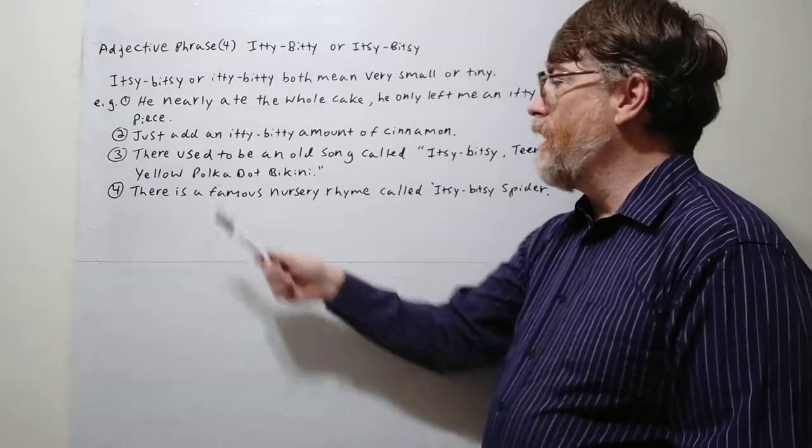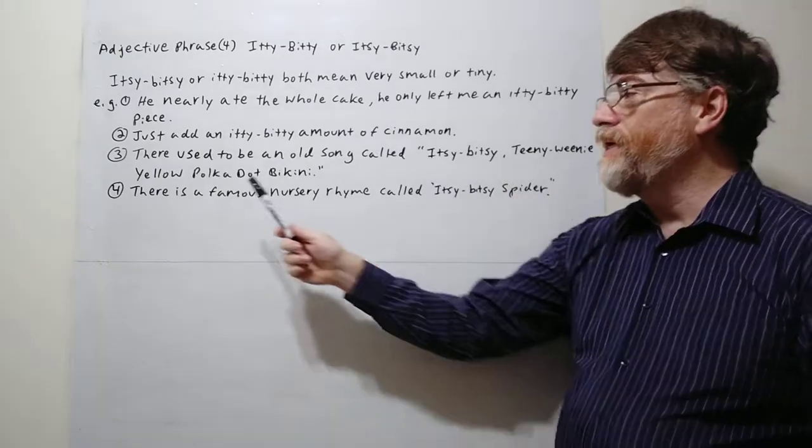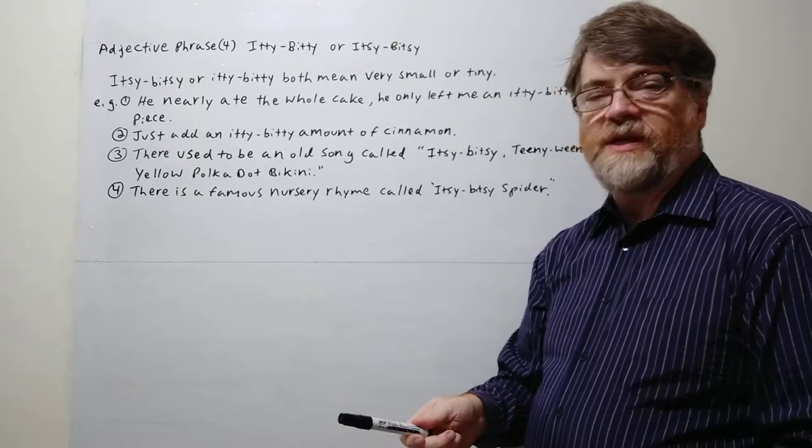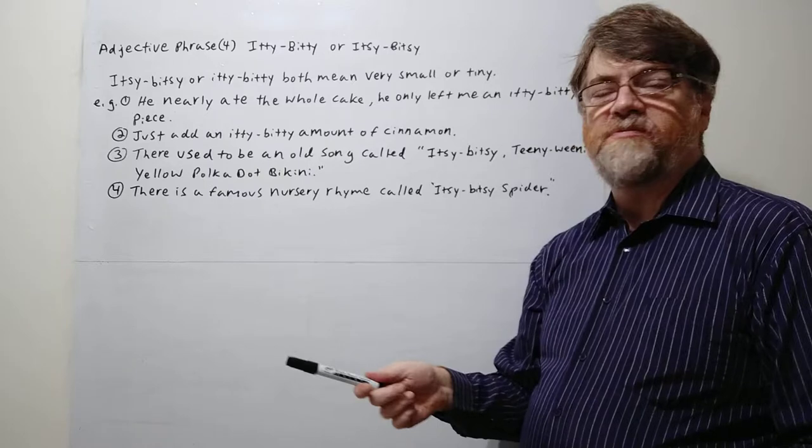Number three: There used to be an old song called Itsy-Bitsy Teeny-Weeny Yellow Polka Dot Bikini. Yeah, it was another one of those songs that was meant to be very funny. How did it go? It went something like this.